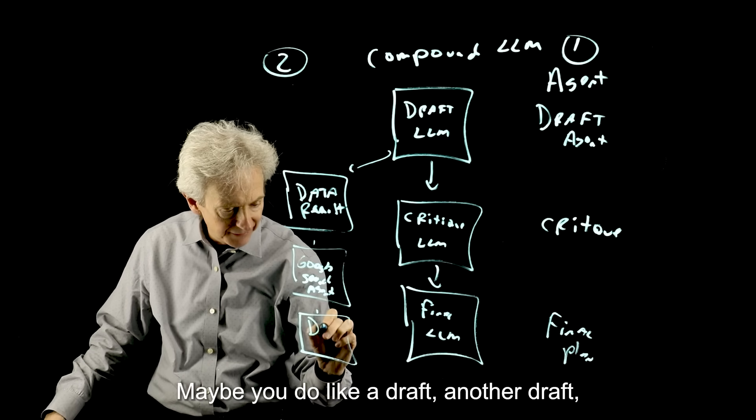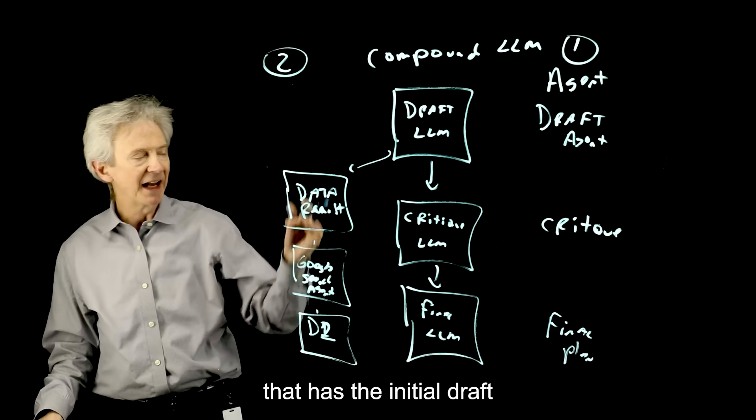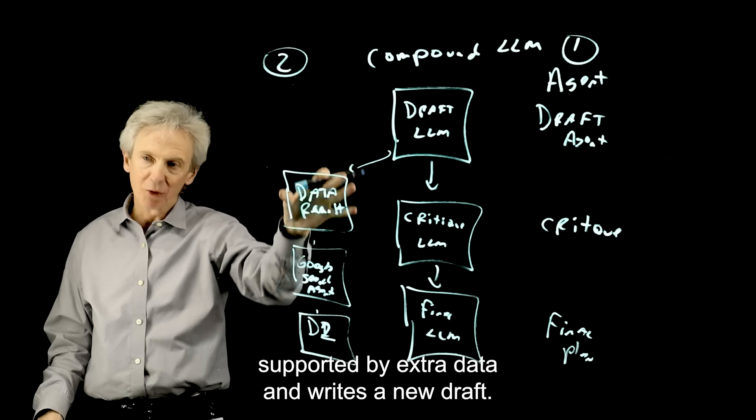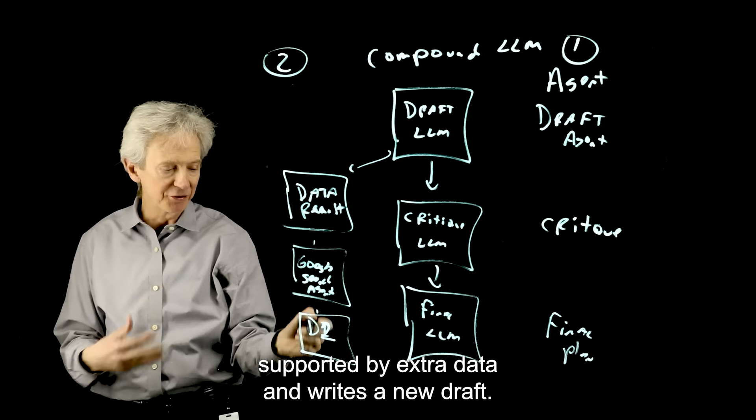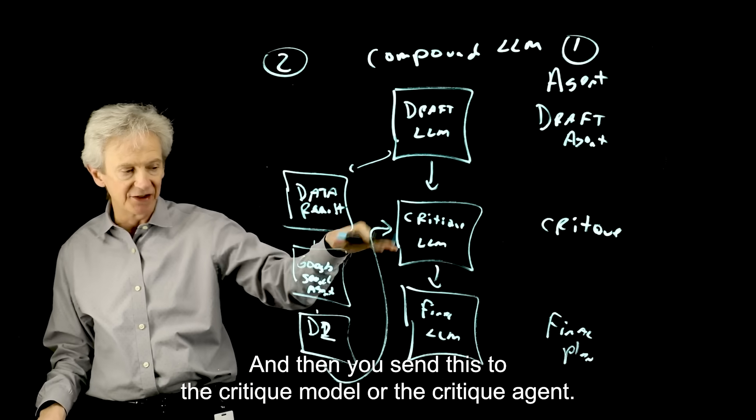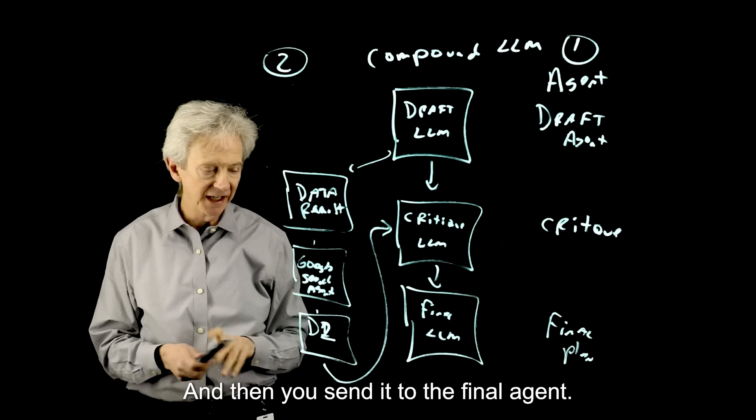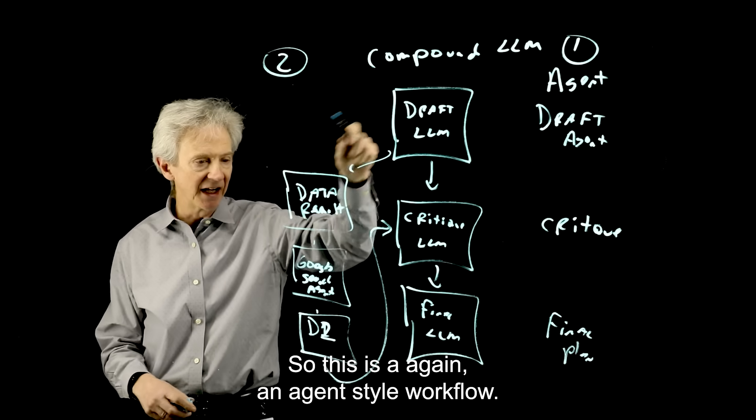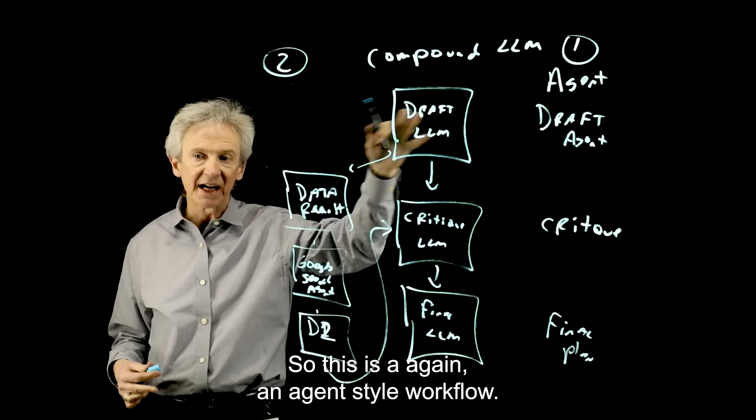And then it feeds that answer. Maybe you do like a draft, another draft that has the initial draft supported by extra data and writes a new draft. And then you send it to the critique model or the critique agent. And then you send it to the final agent. So this is, again, an agent style workflow.